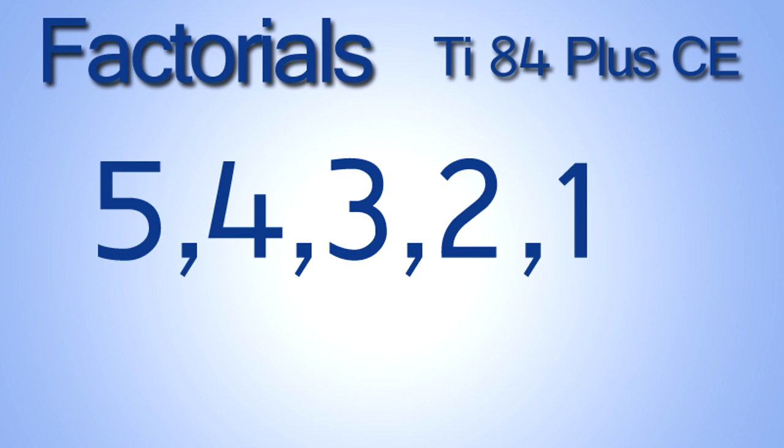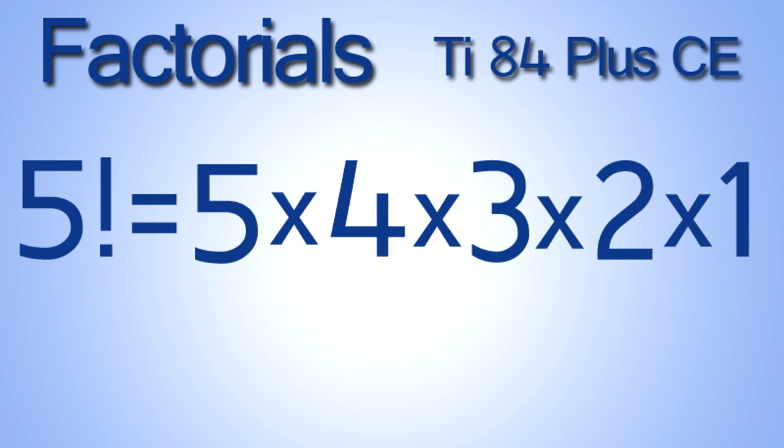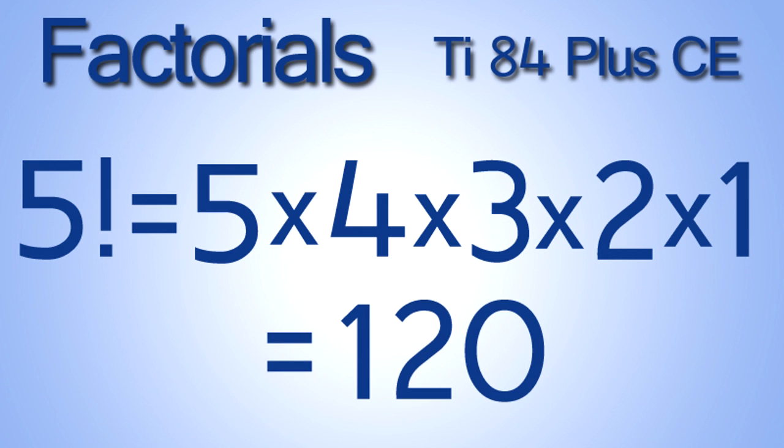For example, let's calculate 5 factorial. First we rewrite 5 factorial. This exclamation point is the symbol we used for factorial. 5 factorial is equal to 5 times 4 times 3 times 2 times 1, which is equal to 120.